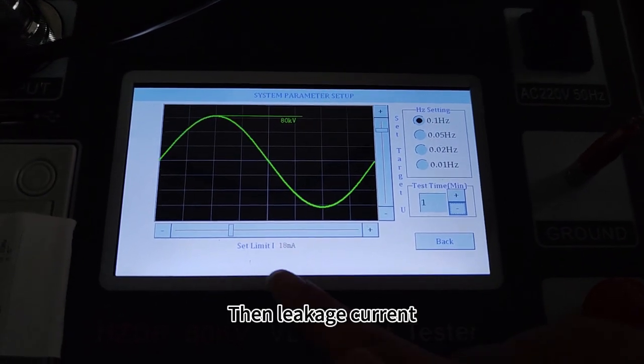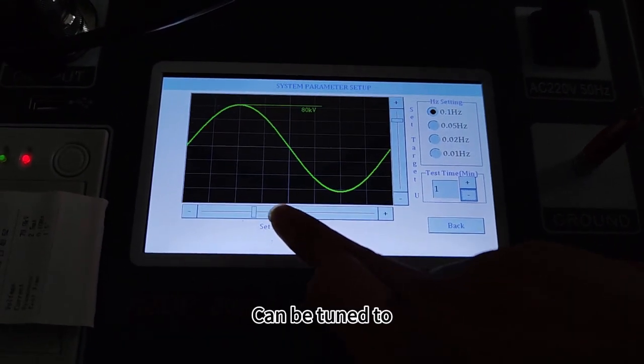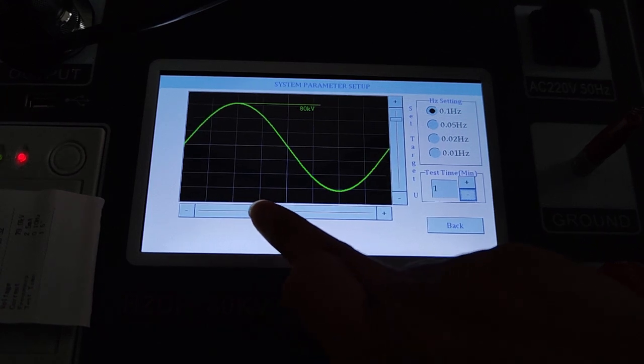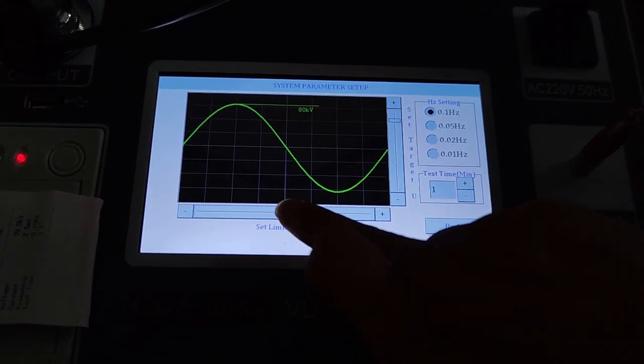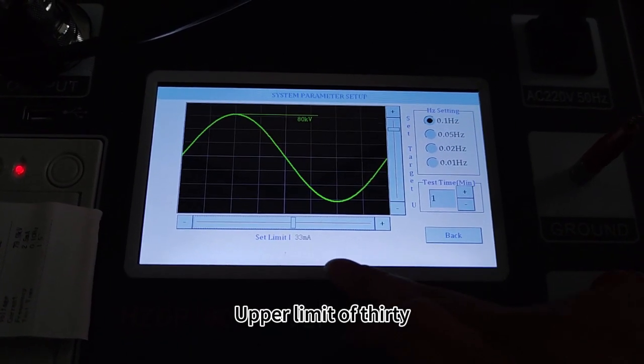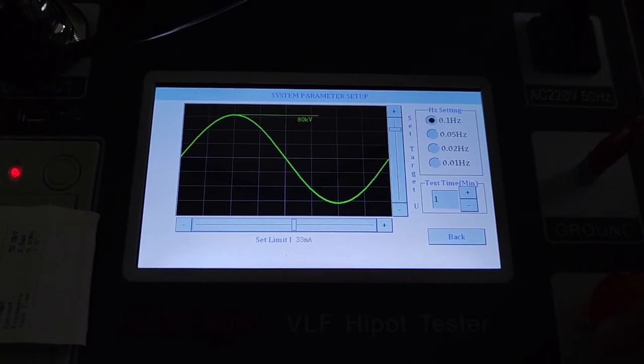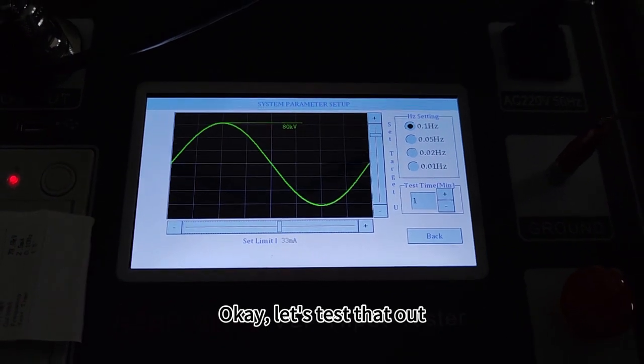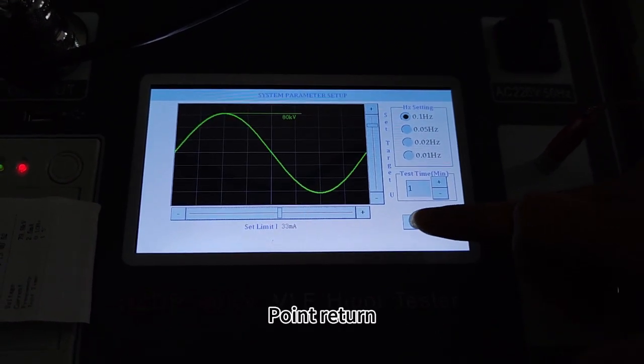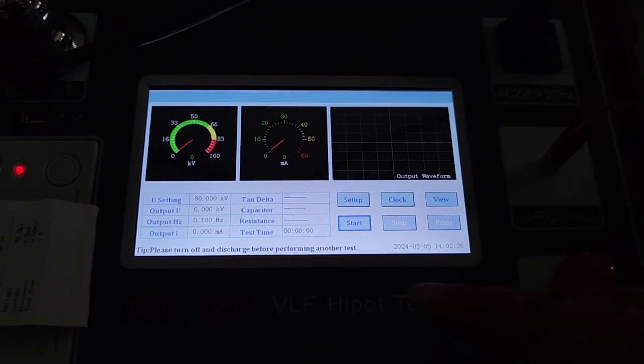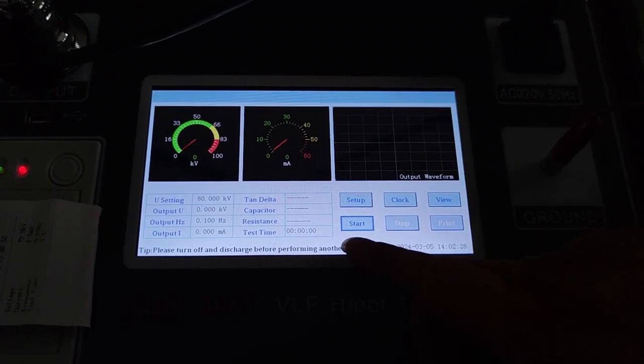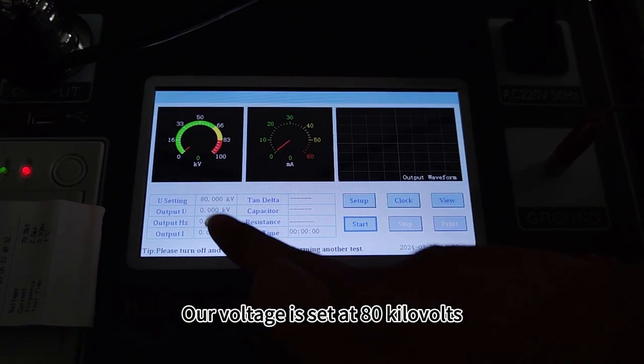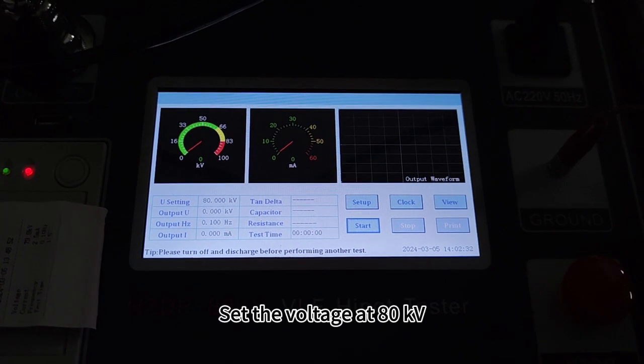The leakage current can be tuned to an upper limit of 30. Okay, let's test. Point return, point start. Our voltage is set at 80 kilovolts.